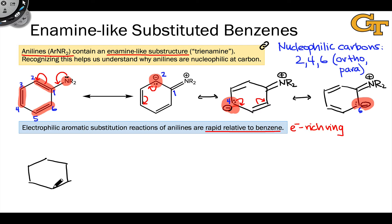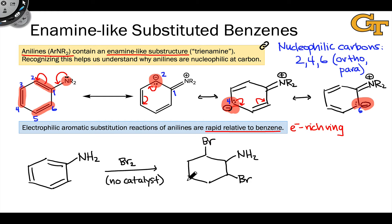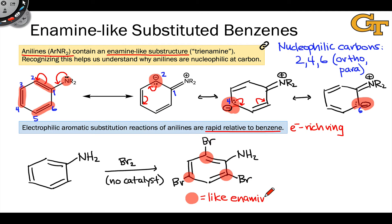For example, we can simply treat aniline with Br2 — bromine — with no catalyst (a catalyst is usually required in these reactions) to substitute hydrogen for bromine at the two, four, and six positions. At these highlighted positions, we have what look like enamine alpha carbons, and we've seen these acting as nucleophiles previously. These carbons within anilines react exactly analogously.